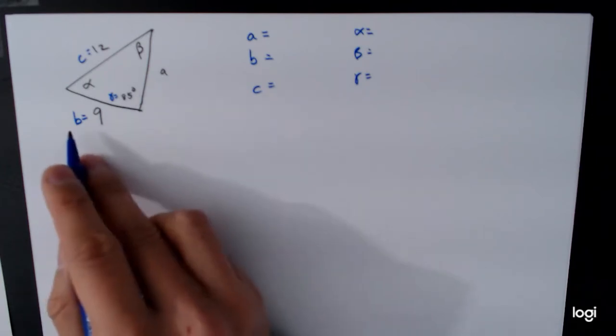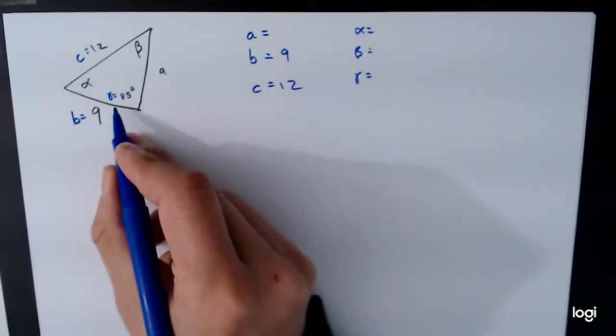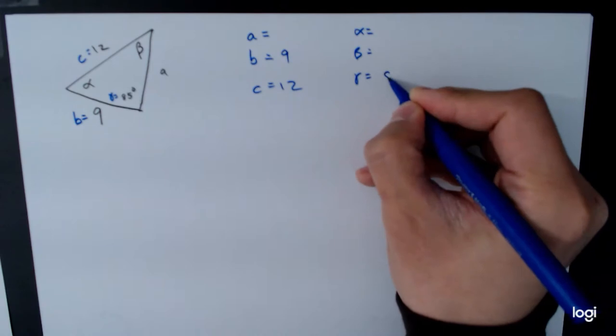So A is not known, B is 9, C is 12, alpha, beta, not known, gamma is 85 degrees.